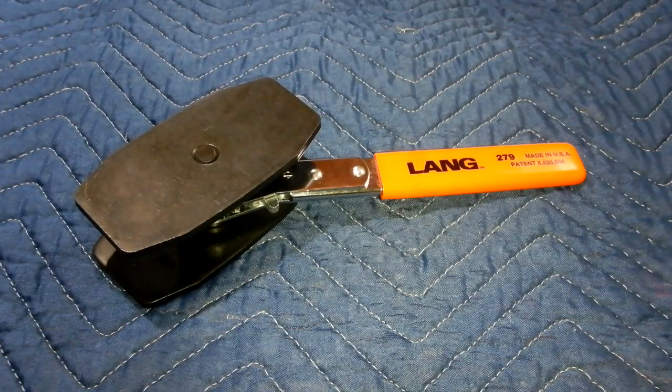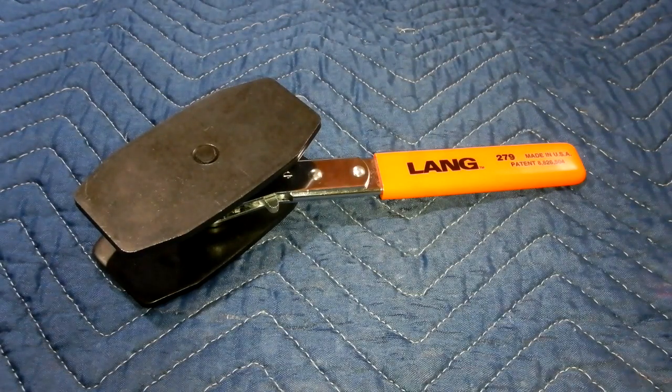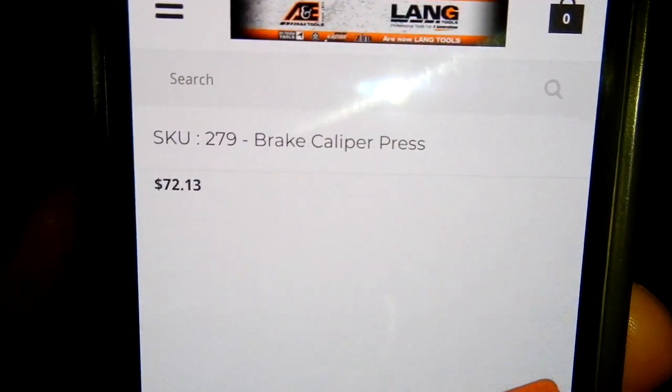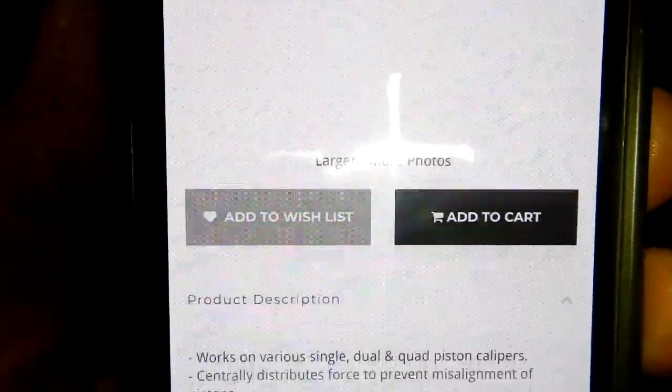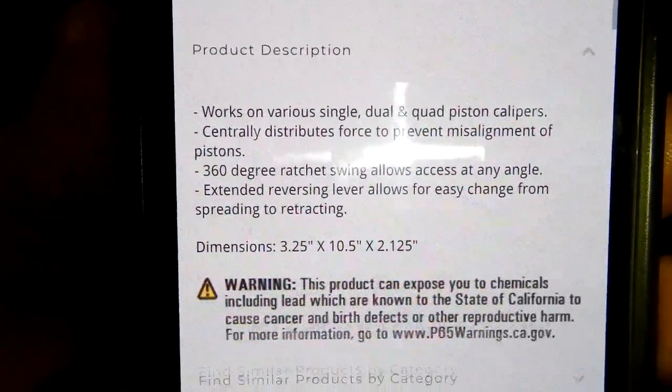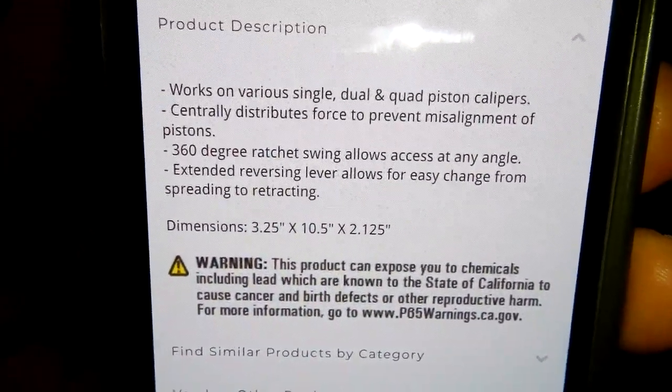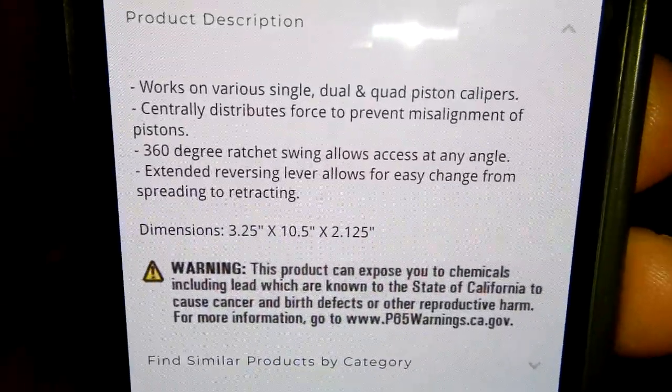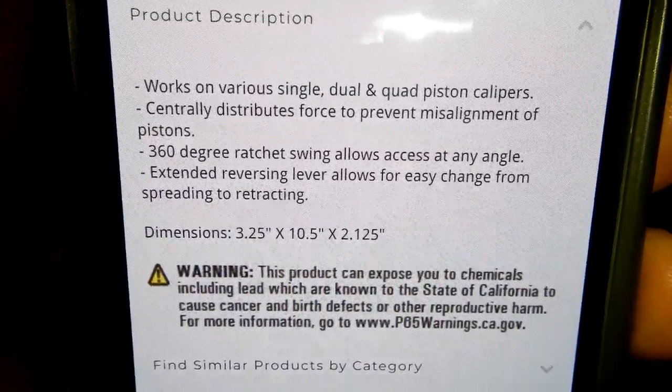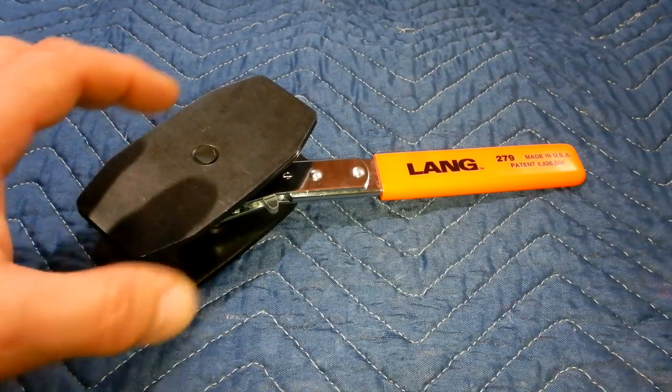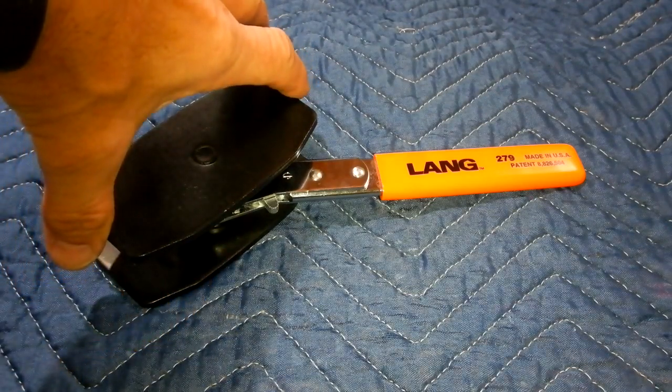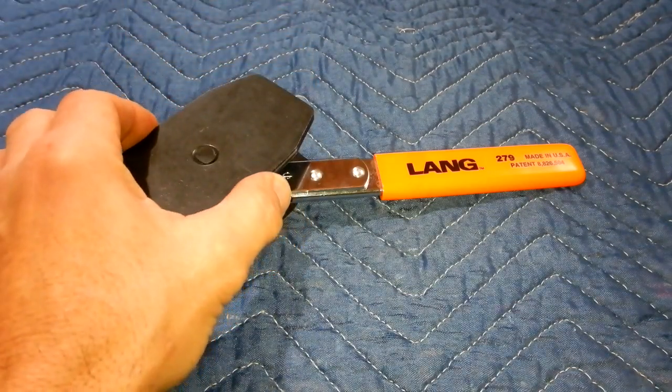We're going to take a look at the Lang 279 brake caliper press. I bought this off of Amazon, so I didn't pay that much. Just see there now this pad measures four and a half by two and three-eighths.